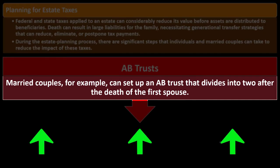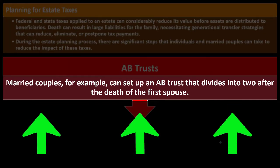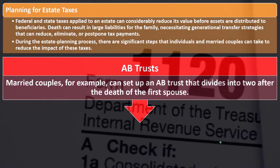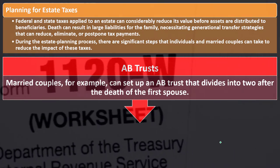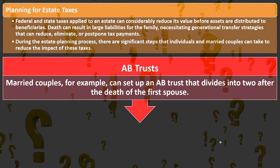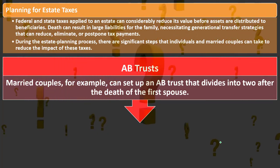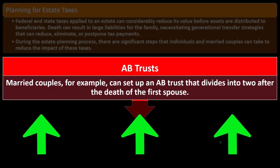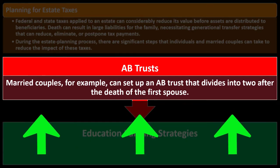One strategy: A-B trusts. Married couples can set up an A-B trust that divides into two after the death of the first spouse. For estate taxes, married spouses can still be taxed individually, so the question becomes whether you can defer taxes until the second spouse dies, take advantage of exemptions, and set up a trust — a separate legal entity that technically owns the money — for a specific purpose.